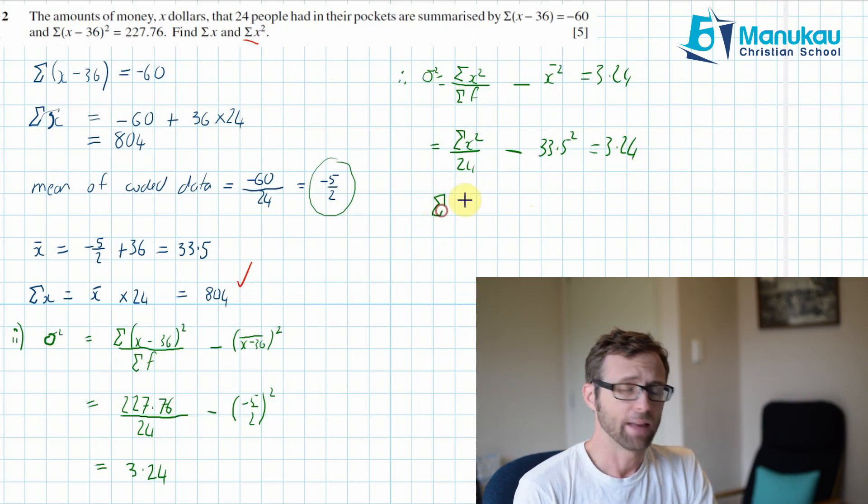Well, at this point, you're going to pull this 33.5 squared across by adding it to that side, then you multiply by 24, and you should have the sum of X squared. I think you can probably do that yourself. My answer is the sum of X squared is equal to, and I get 27011.76 is my final answer.